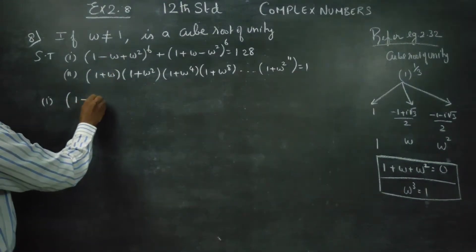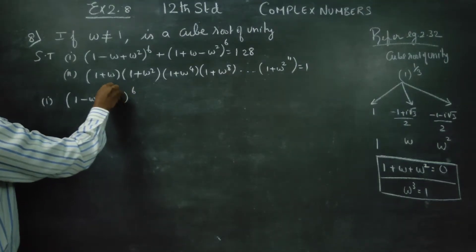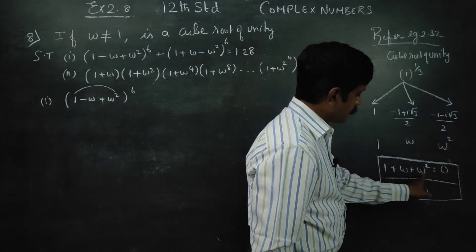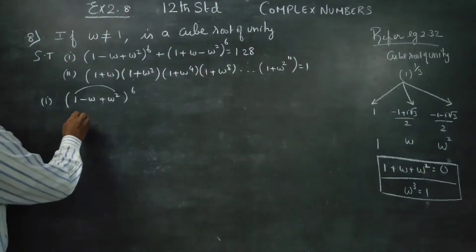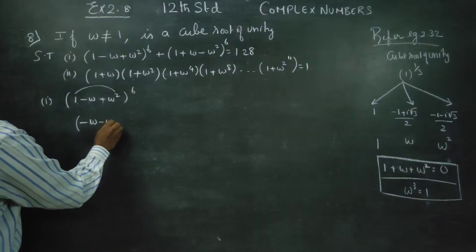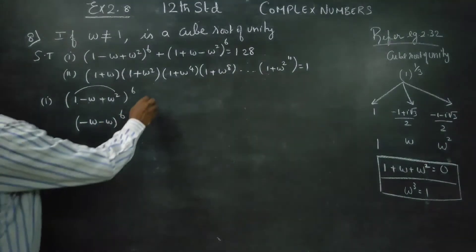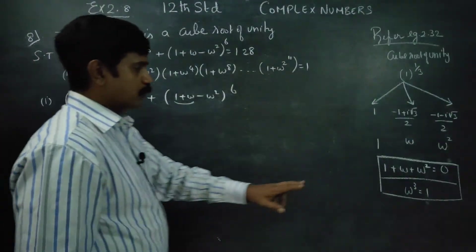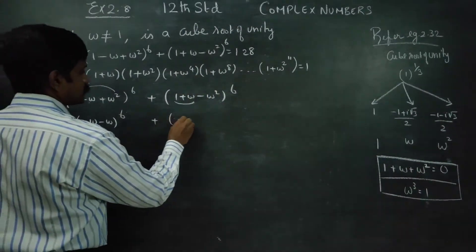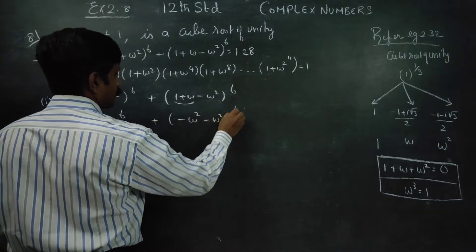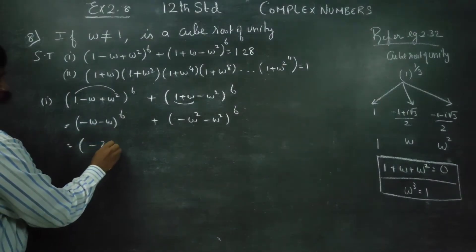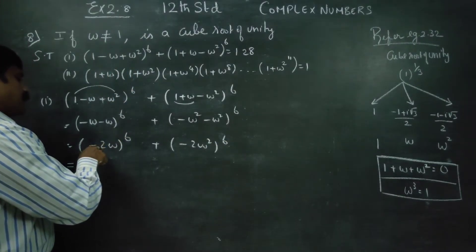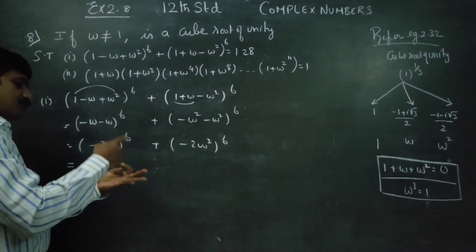Sum number 1: (1 minus omega plus omega squared) all raised to power 6. Now 1 plus omega squared is equal to minus omega. So 1 minus omega plus omega squared becomes minus omega minus omega, which is minus 2 omega, all to the power 6. For the second term: (1 plus omega minus omega squared) all power 6. What is 1 plus omega? It is minus omega squared. So this becomes minus omega squared minus omega squared, which is minus 2 omega squared, all to the power 6.